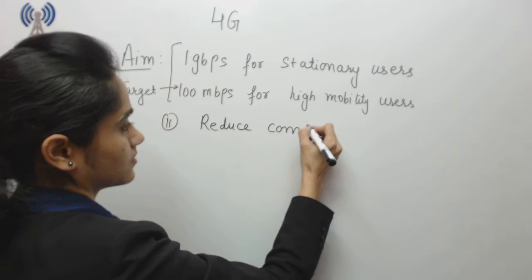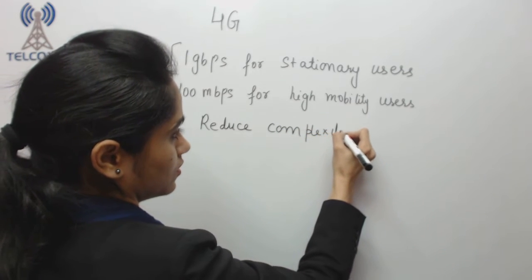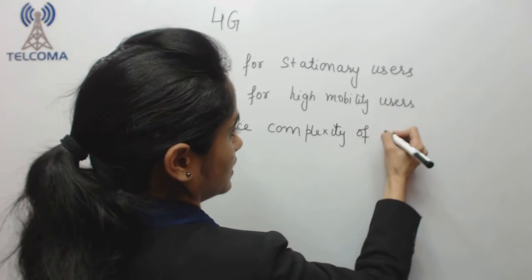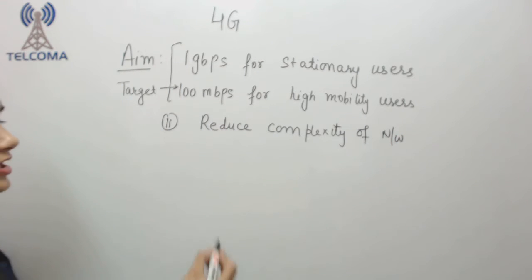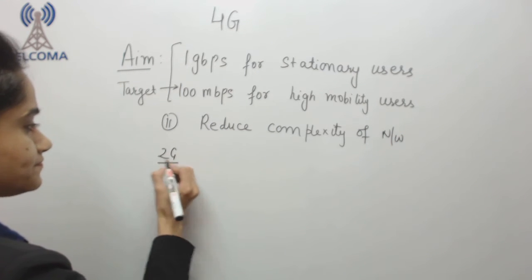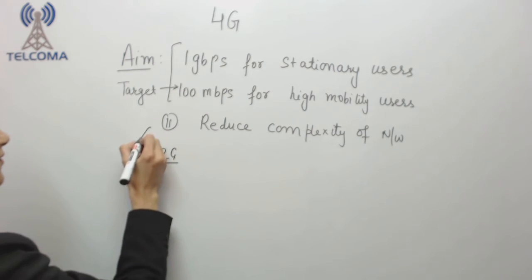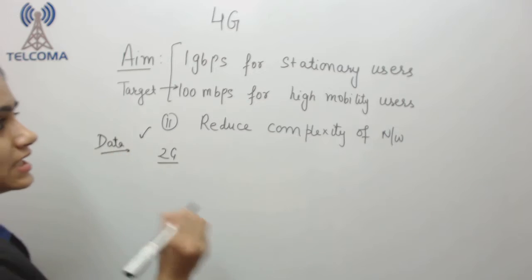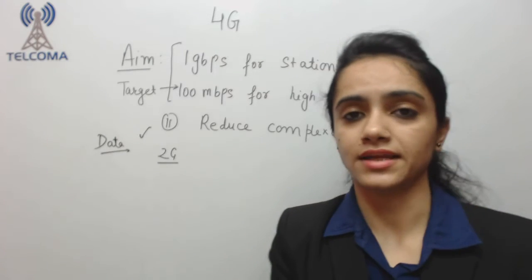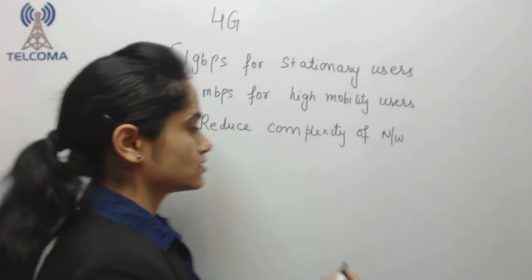Now what about the complexity of the network? Let's talk about 2G. Here we will talk about data because main aim is high mobility and high data rates.